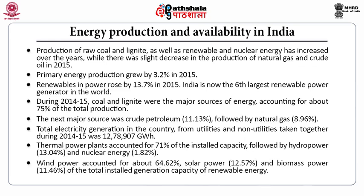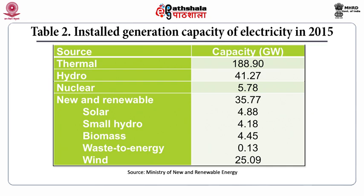In this table, you can see the installed generation capacity of electricity as per 2015. The thermal capacity is 188 gigawatt, hydro is 41.27 gigawatt, nuclear power is 5.7 gigawatt, and new and renewable energy totals 35.77 gigawatt, coming from solar, small hydro, biomass energy, waste-to-energy and wind energy.